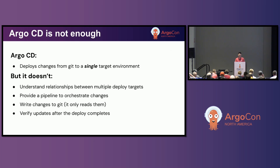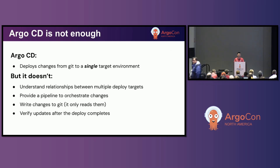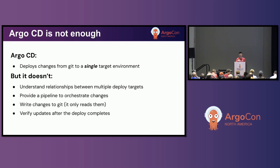When we built Argo CD, we built it as a tool to help practice GitOps, but it was never enough. It's great at deploying changes from a Git repository to a single environment, but there's a lot of things that it doesn't do. First, it has no understanding of multiple environments or a concept of a pipeline to orchestrate changes across environments. It doesn't even help you write changes to Git because it expects some other tool to do that ahead of time. And finally, once it does sync an app, it doesn't do any verification of that update after the fact, such as running any form of tests or analysis.